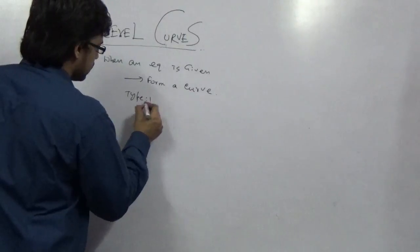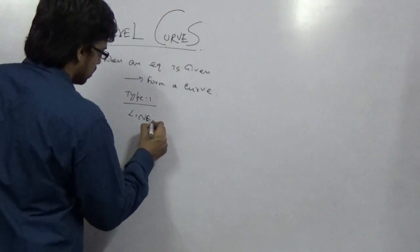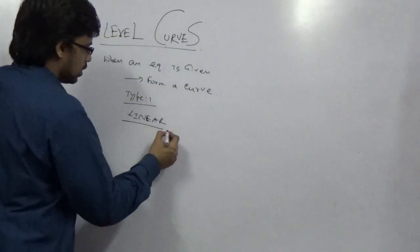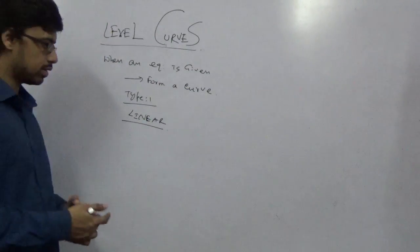So first coming to type 1 of level curve which is a linear one. So what is a linear curve? How to identify the linear curve?